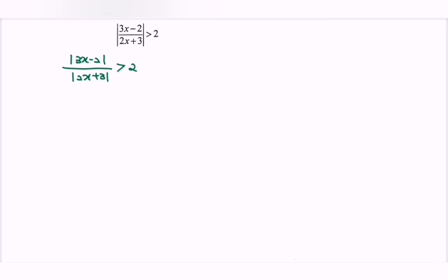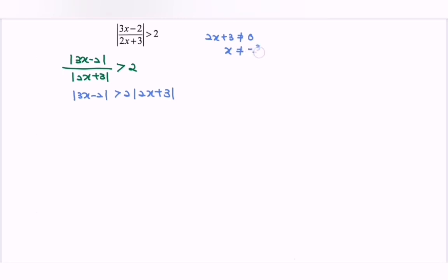Since the denominator part is always positive, we are allowed to cross multiply. So 3x minus 2, greater than 2 multiplied with 2x plus 3. Do remember: state the restriction where the denominator 2x plus 3 cannot be equal to 0. So x cannot be equal to negative 3 over 2. If the denominator becomes 0, the expression will be undefined.